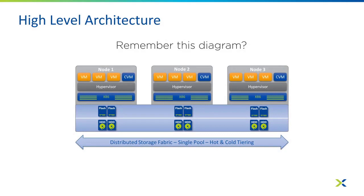The high-level architecture, which you've probably seen if you've worked with Nutanix, consists of multiple nodes with user virtual machines, hypervisor storage — whether that's flash, spinning media, or all-flash — and a thing called a controller virtual machine (CVM). The CVM, shown as a little blue box in the top right-hand corner of each node, is pretty much the orchestrator in a Nutanix environment.